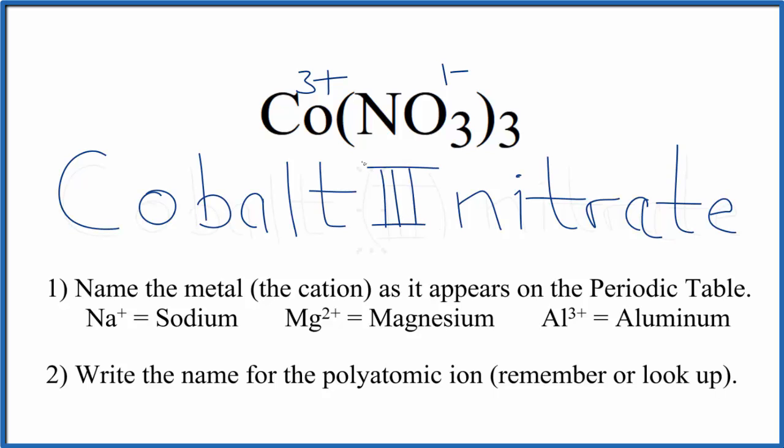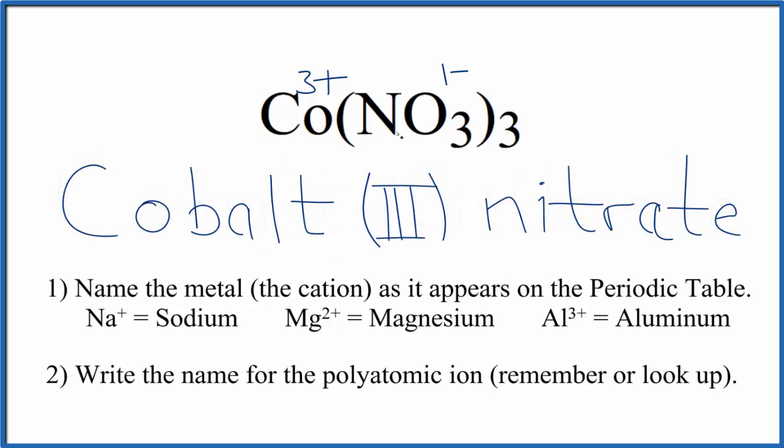And that makes the name for Co(NO3)3 cobalt (III) nitrate. If you're given the name, you know that the cobalt has to have a three plus charge because of the Roman numeral in the name. And because you know the nitrate ion is one minus, you'll need three of those to balance out the three plus.